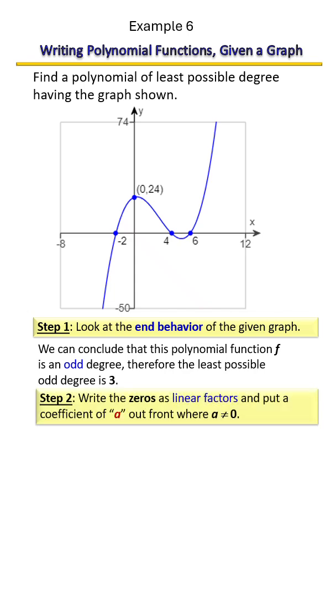Next we want to write our zeros as linear factors. When you write it as linear factors, recall you're putting it in the form of x minus. So if we have negative two and we plug that in, we're going to get x plus two. A zero of four would be x minus four, and a zero of six would be x minus six.